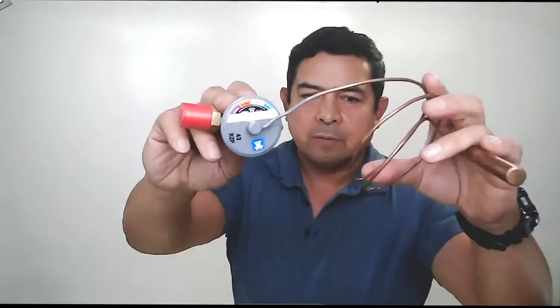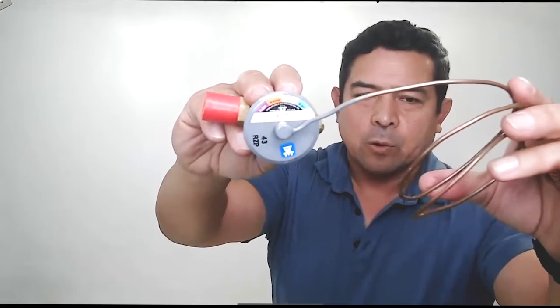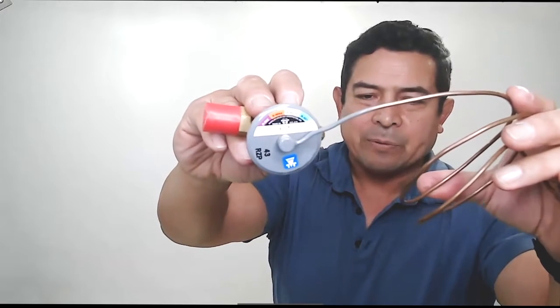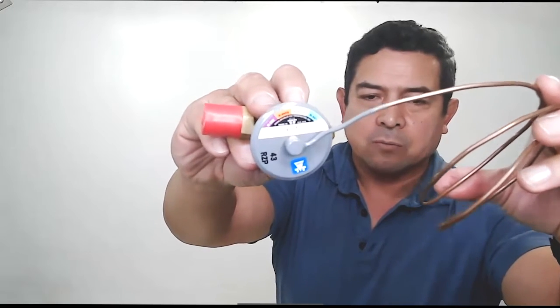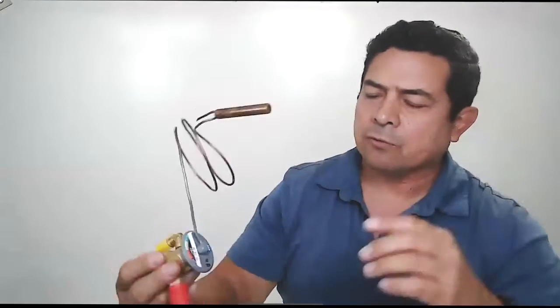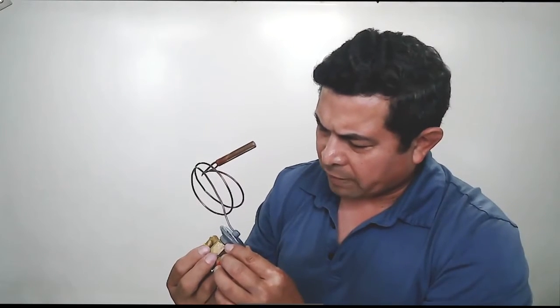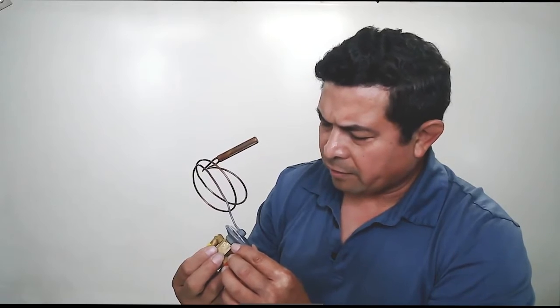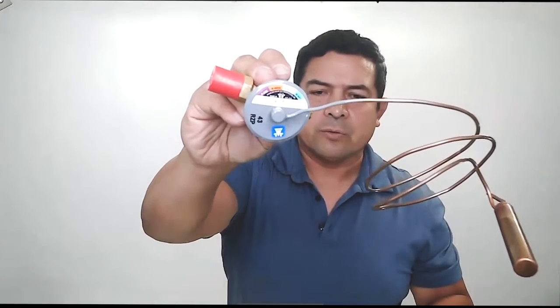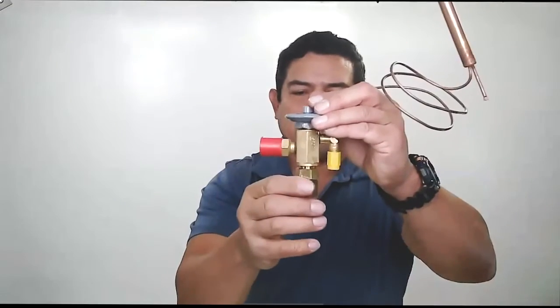On this one, we see that it has the different colors up on top. That is going to tell me what type of refrigerants I can use this TXV on. So for example, this is 4502, 404A, 402A and 507. Those are the refrigerants in my power head up here.